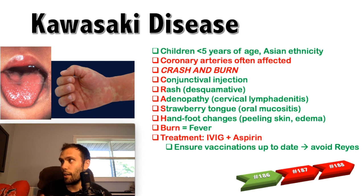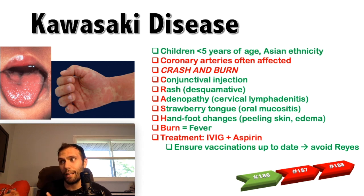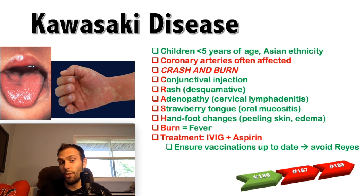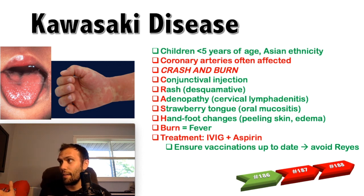One acronym I really like for Kawasaki disease is CRASH and BURN. The C is conjunctival injection — conjunctivitis is the second most common symptom behind fever. The R is rash, which is nonspecific, commonly beginning in the genital area and also on the palms and soles, and a peeling rash can signify the disease is subsiding. A is adenopathy — cervical lymphadenitis is common.